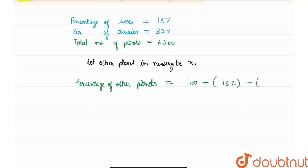and minus the percentage of daisies which is 32. Therefore, my percentage of other plants would be 100 minus 15 plus 32, that would be 100 minus 47, that would be 53.